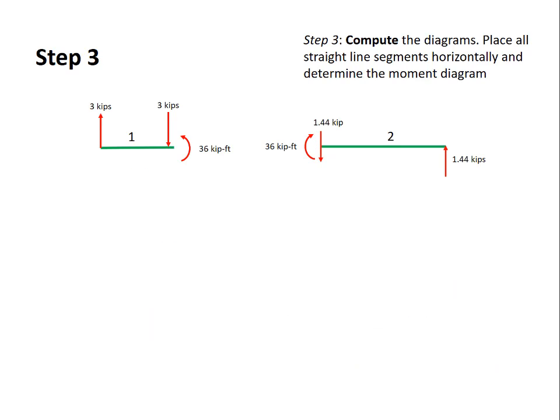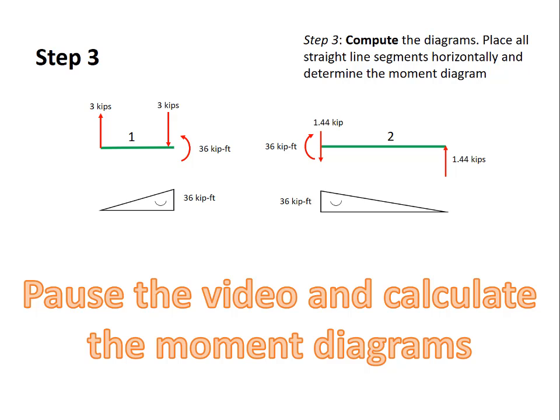In step 3 I compute the diagrams. I place all the straight line segments horizontally and I compute the moment diagram. Do this with any technique you have already. The graphical technique is most often the best. If I compute moment diagrams for these two beams I get the moment diagram shown here. It's assumed that you already know how to compute moment diagrams for beams although definitely not as quickly as I've done it here. So take a moment, pause the video and actually compute the moment diagrams. Make sure that you can arrive at this result. Now that you've verified that you can compute these moment diagrams we're ready to move on to the next step.